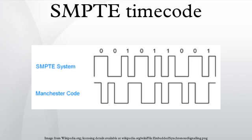Vertical interval timecode, also known as VITC, is recorded directly into the VBI of the video signal on each frame of video. The advantage of VITC is that, since it is a part of the playback video, it can be read when the tape is stationary.